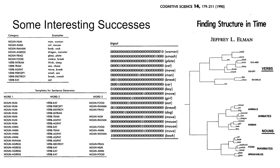That's a big summary of some of the initial explorations a lot of people did with these recurrent network models and trying to connect them to language. But this general idea — I have a recurrent system and I want my output to be dependent on more than just my input right now — in general there's a lot of other things you can do with a system like that.